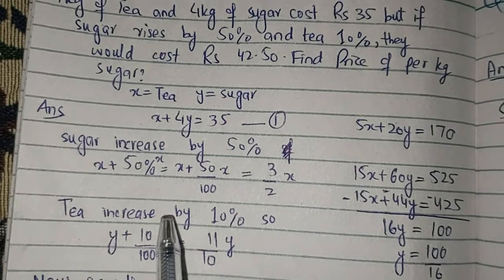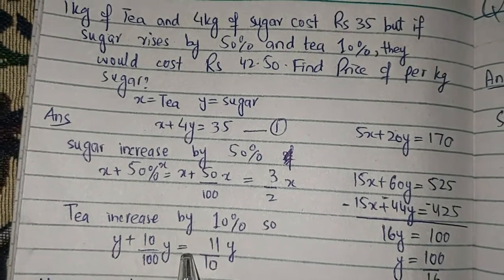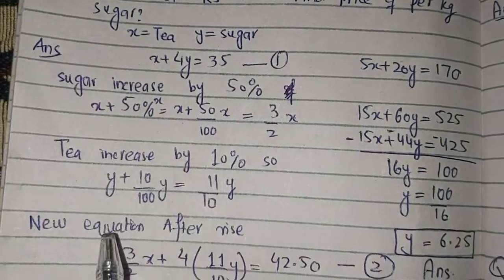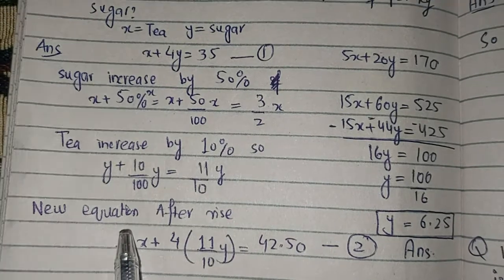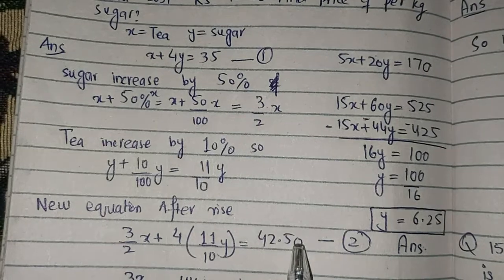Tea increases by 10%, so y plus 10/100 y equals 11/10 y. The new equation after the rise: 3/2 x plus 4 times 11/10 y equals 42.50.